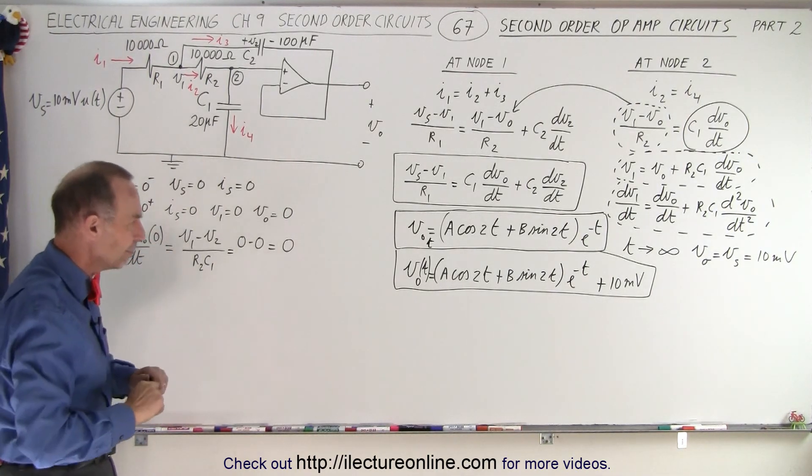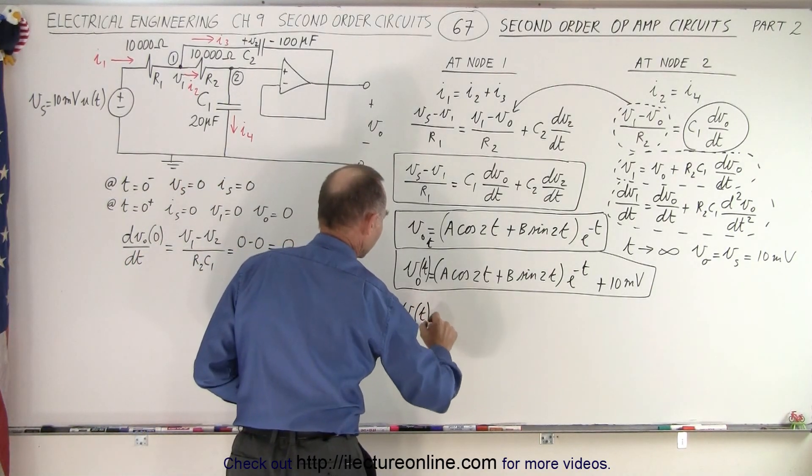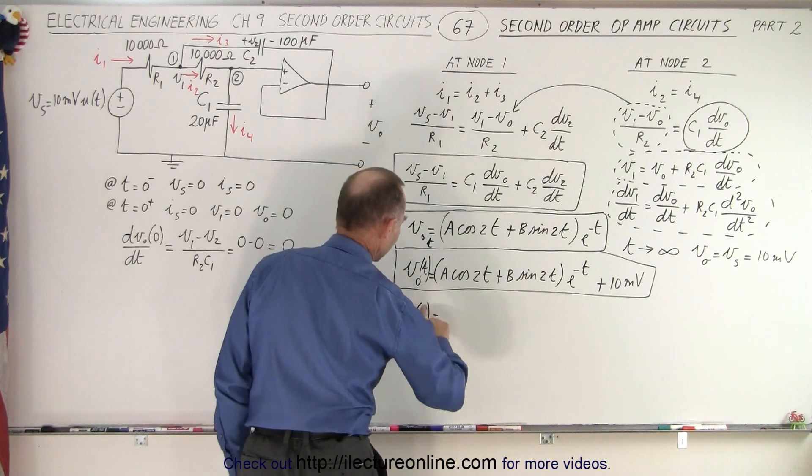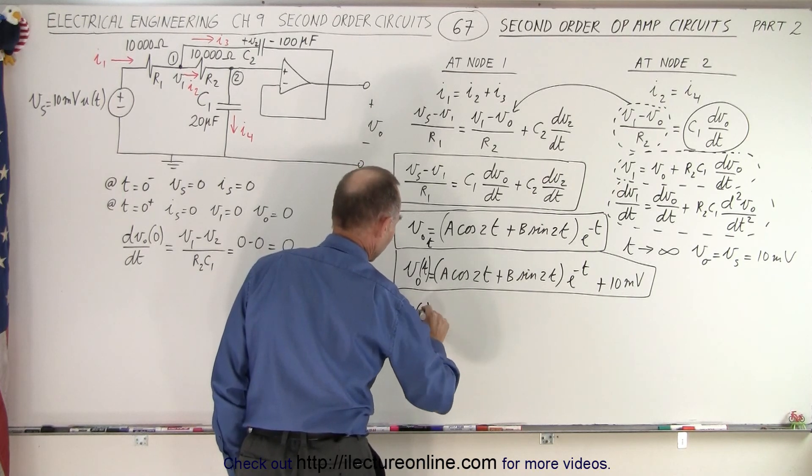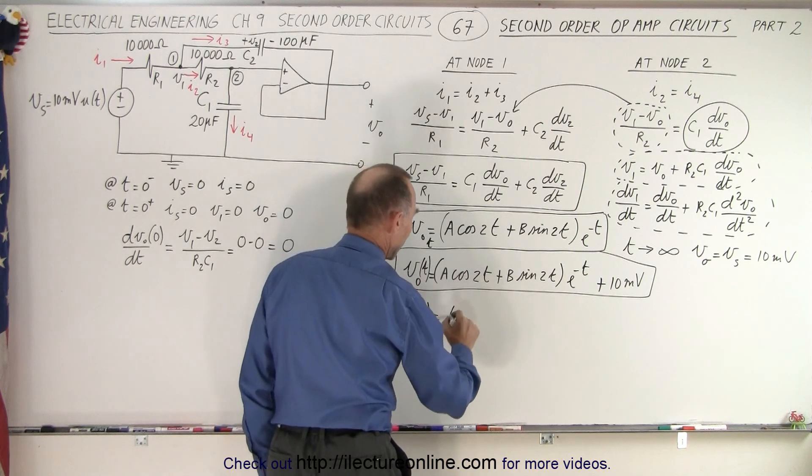Now we're ready to calculate A and B. So we can say that the output voltage, as a function of time, when time is equal to 0, so let's go ahead and put a 0 in here, that's going to be equal to, when this is 0, we get A, plus B, when this is 0, we don't get anything at all, and that means plus 10 millivolts.